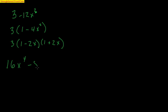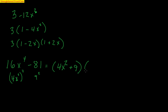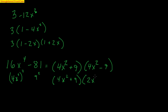Let's do another one: 16x⁴ minus 81. I recognize that 16x⁴ is (4x²)² — 4 squared is 16 and x² squared is x⁴ — and 81 is 9 squared. Using difference of squares, I get (4x² + 9)(4x² minus 9). Then I notice the second factor is another difference of squares — 4 and 9 are both perfect squares. The first factor 4x² + 9 is an addition, so I can't factor that further. But 4x² minus 9 factors into (2x + 3)(2x minus 3). So sometimes you have to do a little factoring first, then factor again.